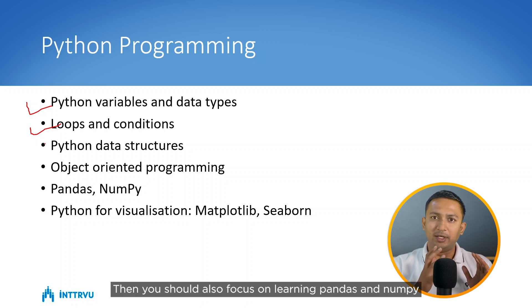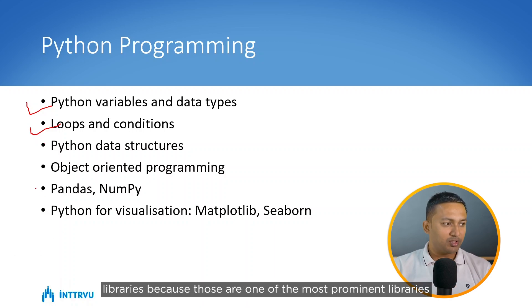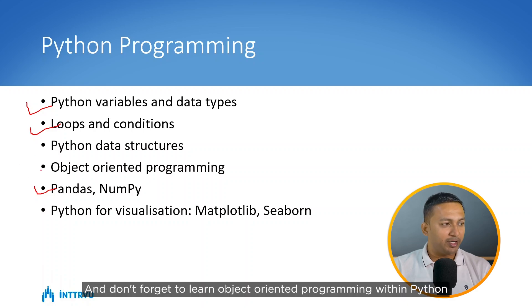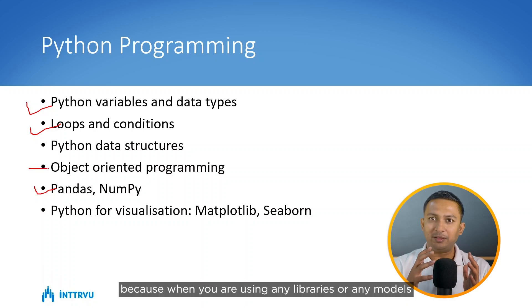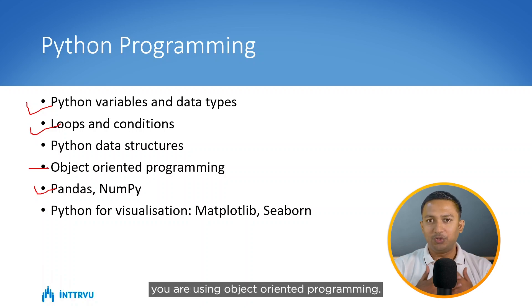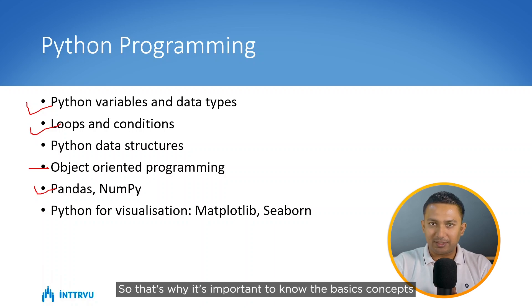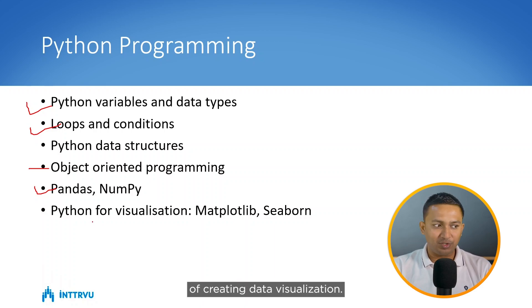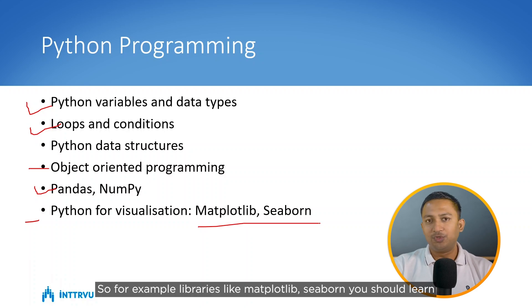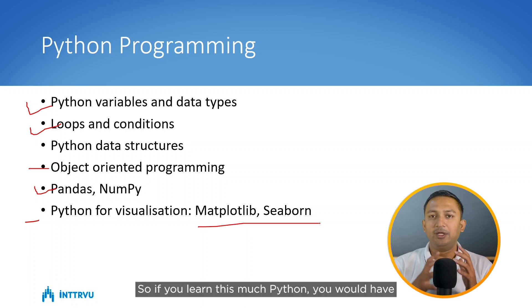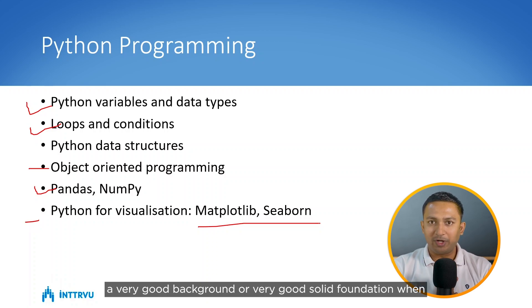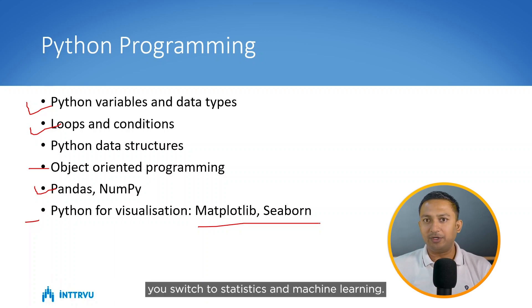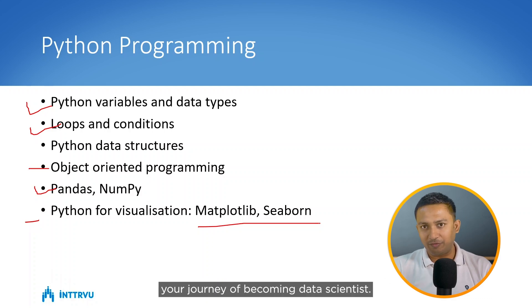You should also focus on learning the pandas and numpy libraries, which are among the most prominent libraries needed when working on machine learning models. Don't forget object-oriented programming within Python, because when using any libraries or models you are using OOP concepts. Also learn data visualization libraries like matplotlib. If you learn this much Python, you will have a very solid foundation when you switch to statistics and machine learning.